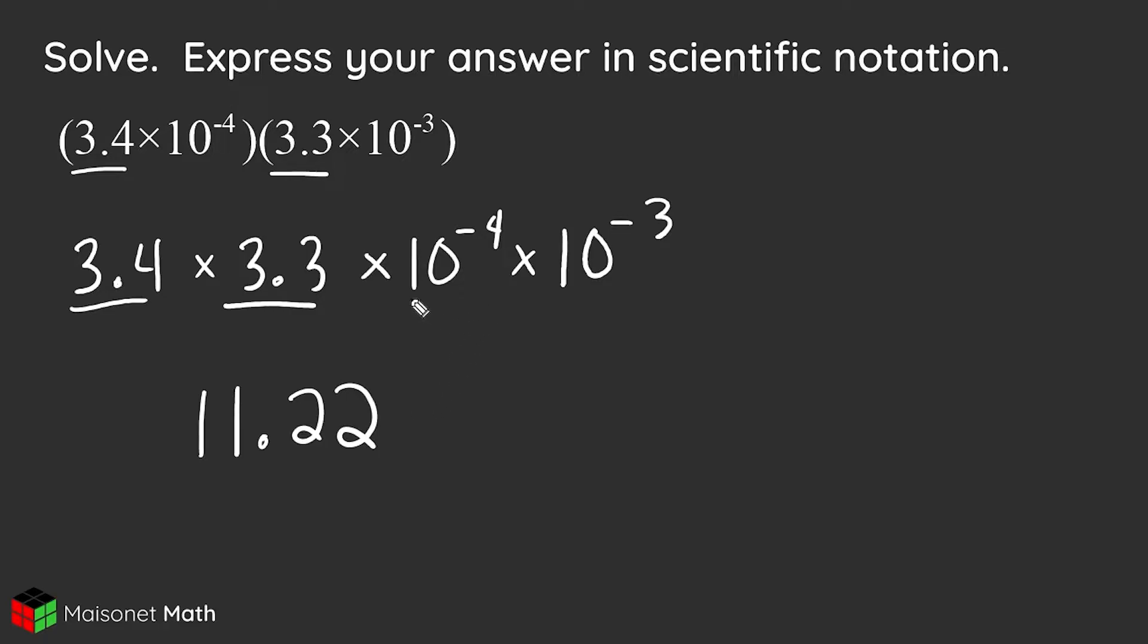All right, the next thing we're going to do is multiply these two values together. Now, when you're multiplying exponents with the same base, the law of exponents states that we can just write that base once and simply add the exponents together. So we take negative 4 and negative 3, and that sum is going to be negative 7.